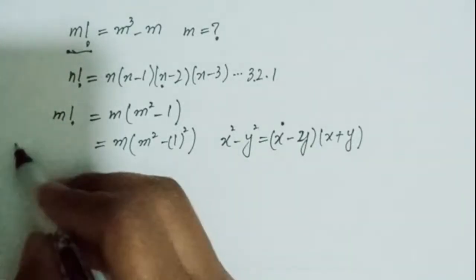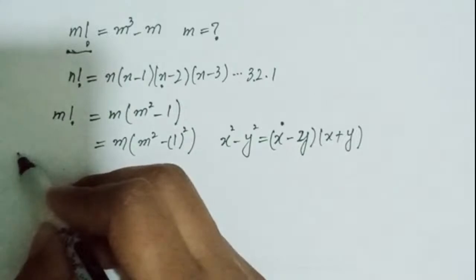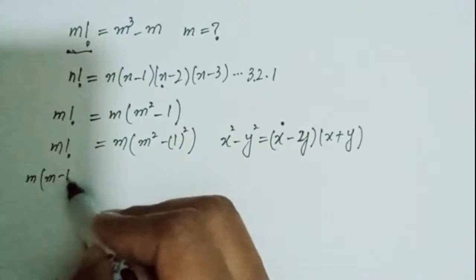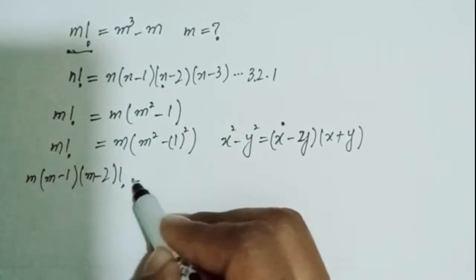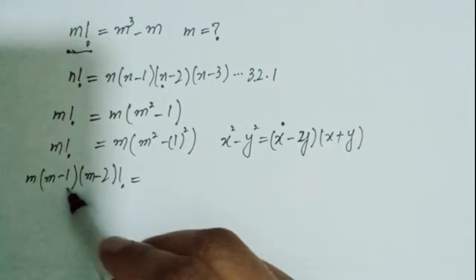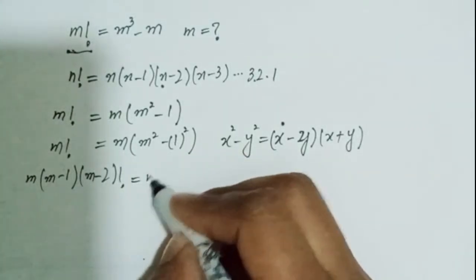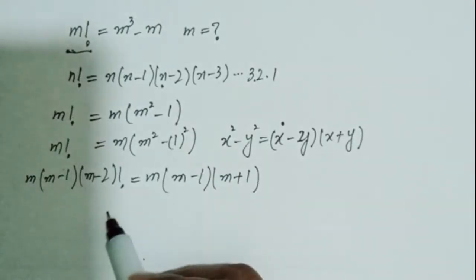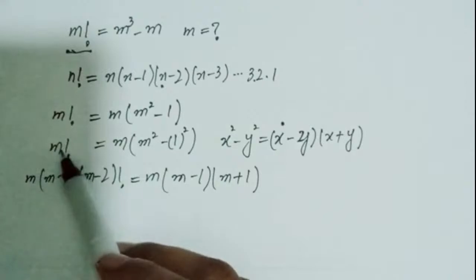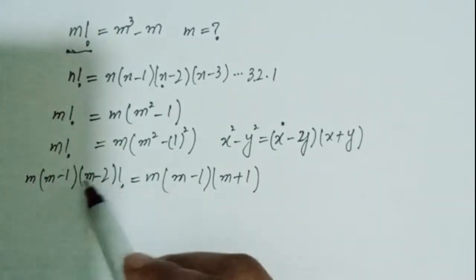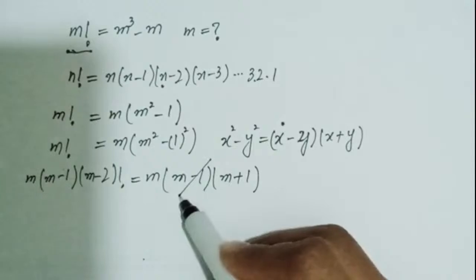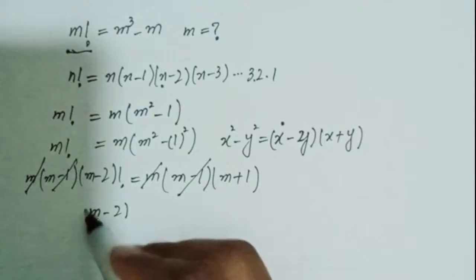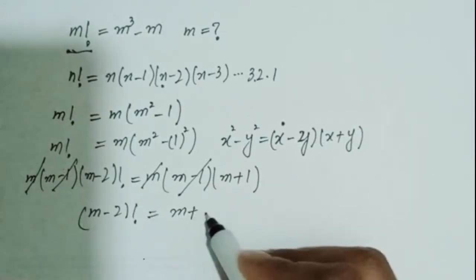Similarly, I can write m factorial as m times (m minus 1) times (m minus 2) factorial. I'll explain why I expand only up to (m minus 1). The right-hand side becomes m times (m minus 1) times (m plus 1). I expand m factorial to (m minus 2) factorial so I can cancel these two terms.